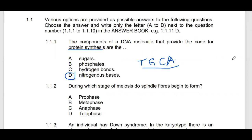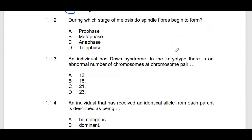Question 1.1.2: During which stage of meiosis do spindle fibers begin to form? Spindle fibers always begin to form during the preparation phase, which we call prophase. So the answer is A. I'll explain more when we go to other sections.